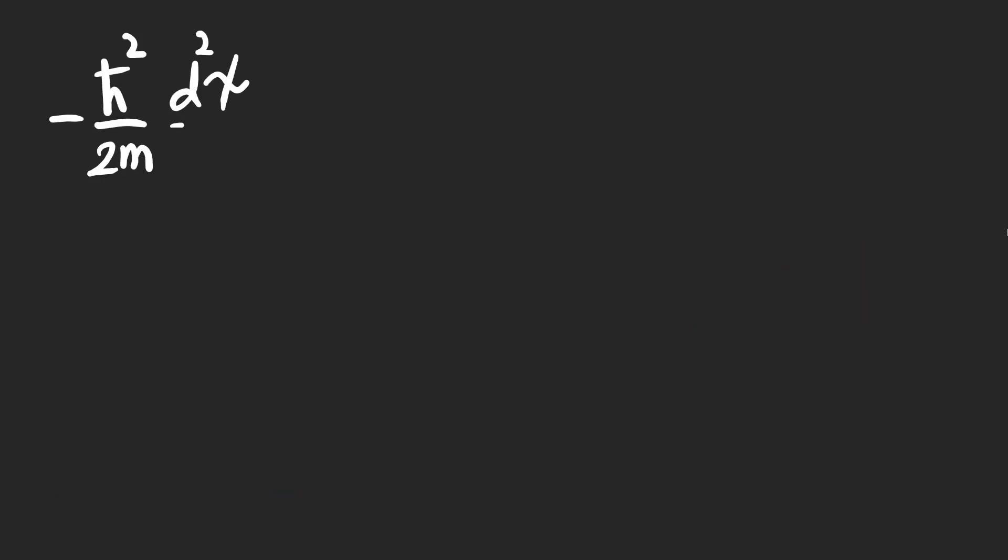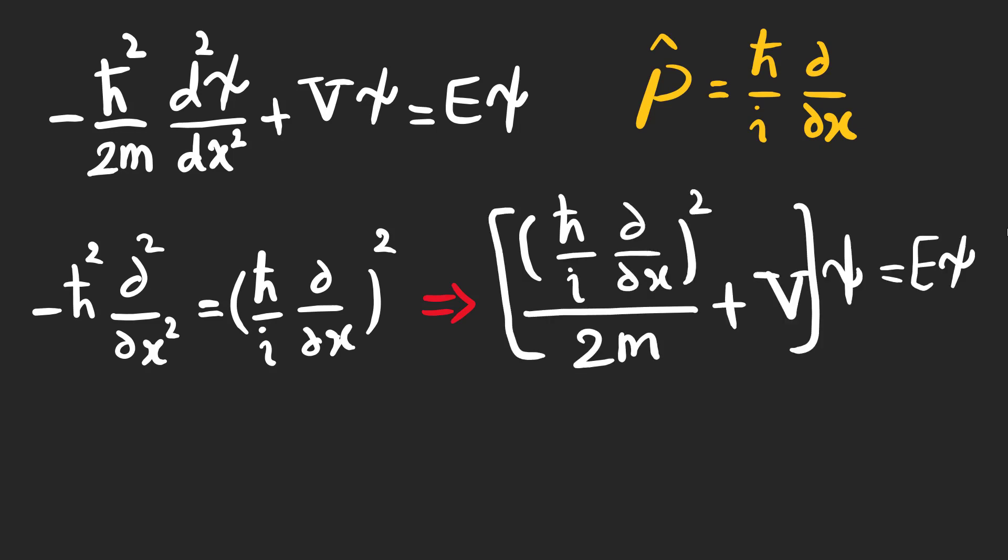Now we move on to the time independent equation which is known as the time independent Schrödinger equation. Let's rewrite this equation in a way that operator p hat appears.